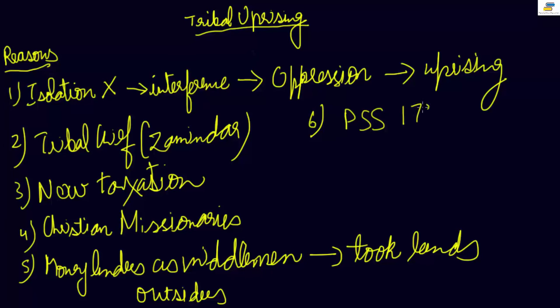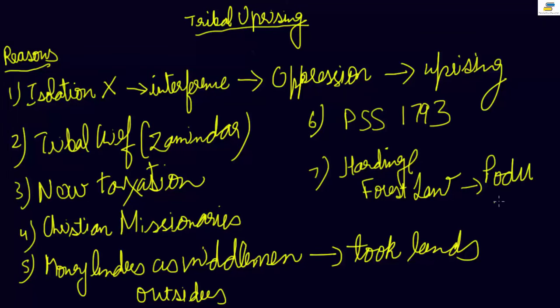The single most important reason for tribal uprising is the permanent settlement system which came in 1793. We have talked about this in detail earlier. The seventh reason: during the time of Lord Hardinge, forest laws were introduced in India and these forest laws prohibited shifting cultivation.